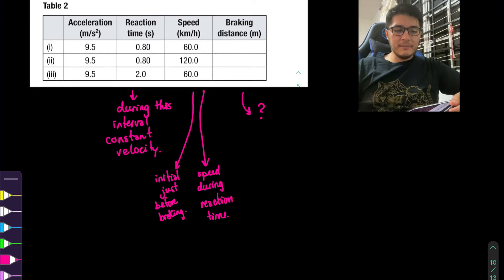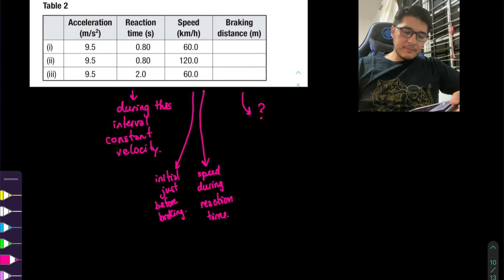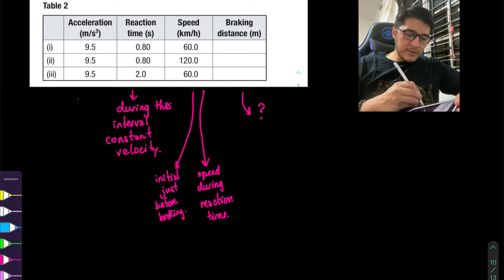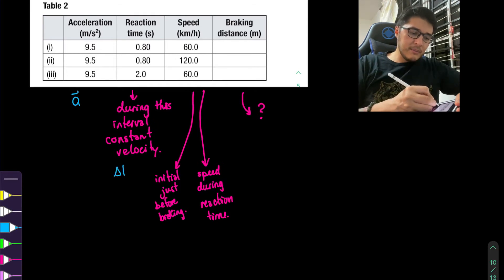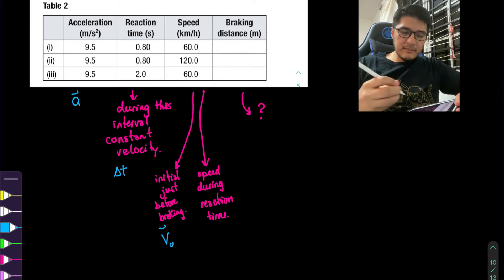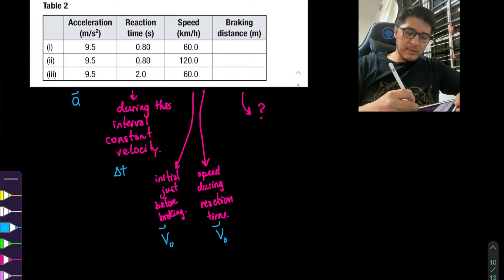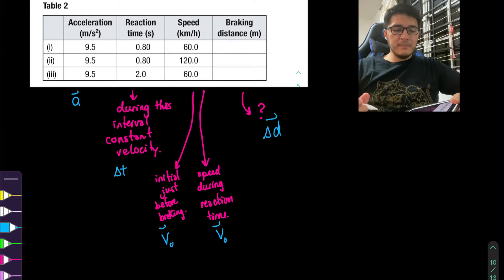And the braking distance is what we're trying to find. So that's our question mark. All right, let's put some variables into this. Our acceleration is going to be a, time interval delta t. And let's call this initial speed Vi. Braking distance, this would be our delta d, the displacement.